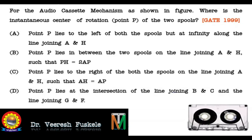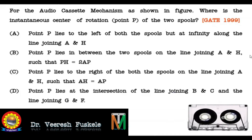The options are given as: point P lies on the left of both the spools but at infinity along the line joining A and H. These two rings or wheels are known as the spools on which the tape actually unwinds and winds. Second option: P lies in between the two spools on the line joining A and H such that PH is equal to 2AP. Third: point P lies to the right of both the spools on the line joining A and H such that AH is equal to AP. And the last option: point P lies at the intersection of the line joining B and C and the line joining G and F.